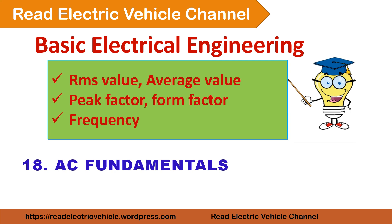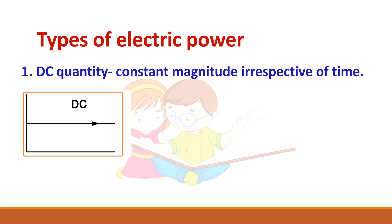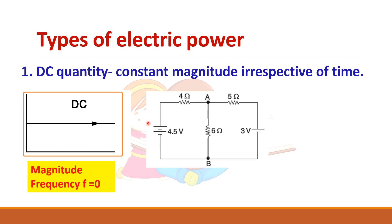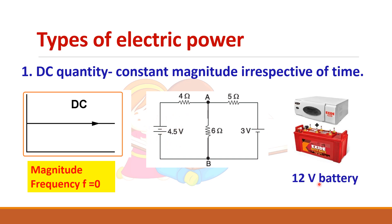In this video let us see the fundamentals of AC circuit. There are two types of electric power: DC and AC. A DC quantity has a constant magnitude with respect to time, represented by a magnitude, and the frequency of a DC quantity is zero. In a circuit, this symbol represents a DC voltage. The best example is a battery.